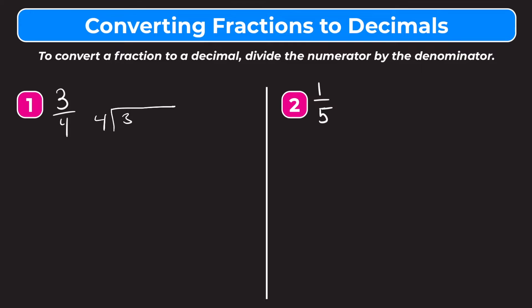We ask ourselves how many times does four go into three. Well, four is bigger than three, so none. In order to do this problem we have to put a decimal point here and add a zero. Now we're asking how many whole groups of four go into thirty. We bring our decimal point straight up. Four goes into thirty seven times. Seven times four is twenty-eight. Now we subtract — thirty minus twenty-eight is two.